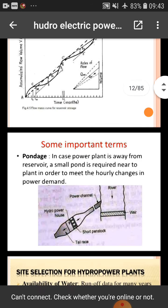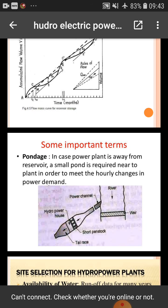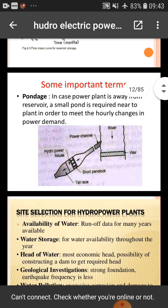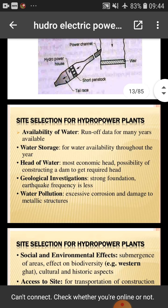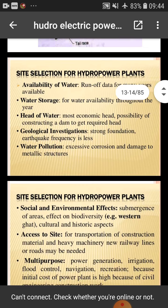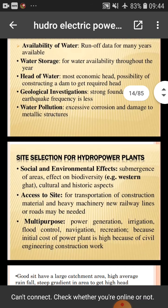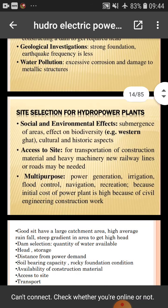Pondage: in the case of a power plant located away from the reservoir, a small pond is required near the plant in order to meet hourly changes in power demand. Site selection for a hydro power plant involves: availability of water, water storage, head of water, geological investigation, water pollution, social and environmental effects, access to site, and multipurpose use.